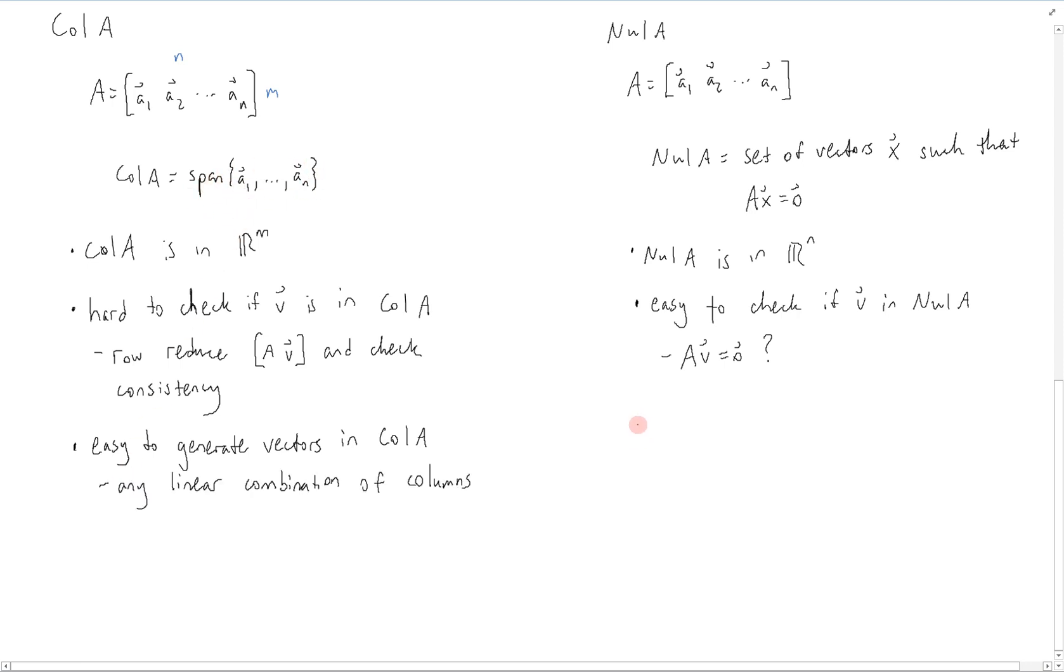For the null space, though, it is in general difficult to generate vectors in the null space. This is because we must find the parametric vector form solution of AX equals 0 to find the X's that would actually make this equal to 0. And this will give us the X's which, when multiplied by A, give you the 0 vector.